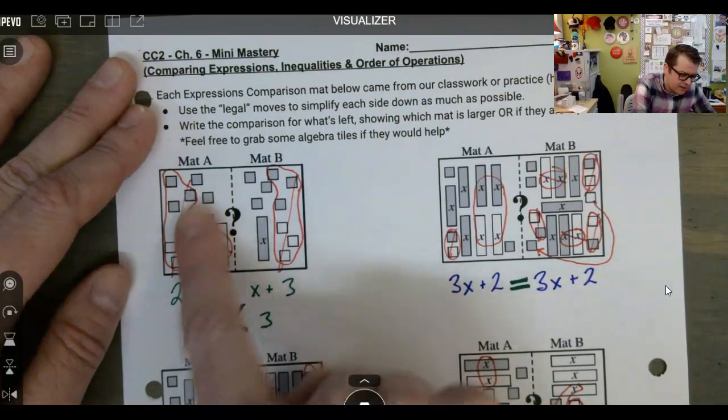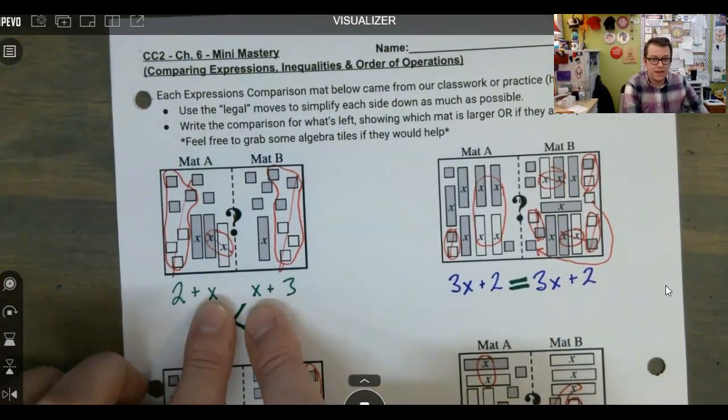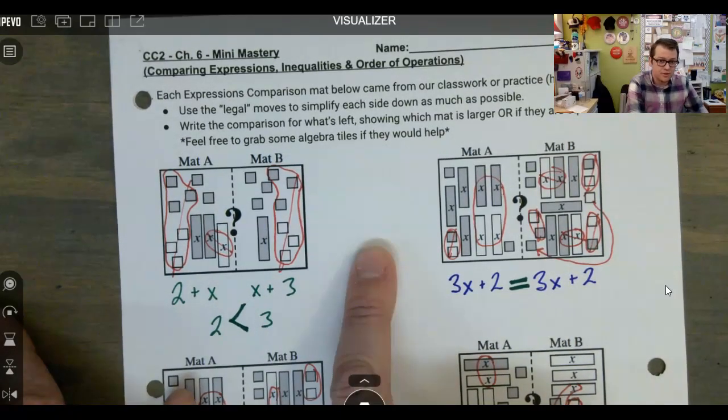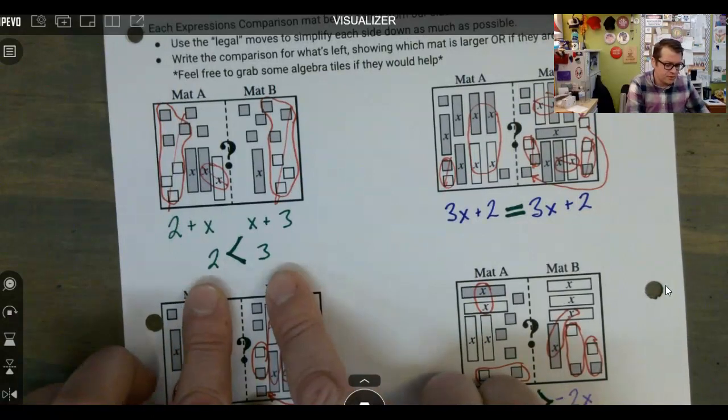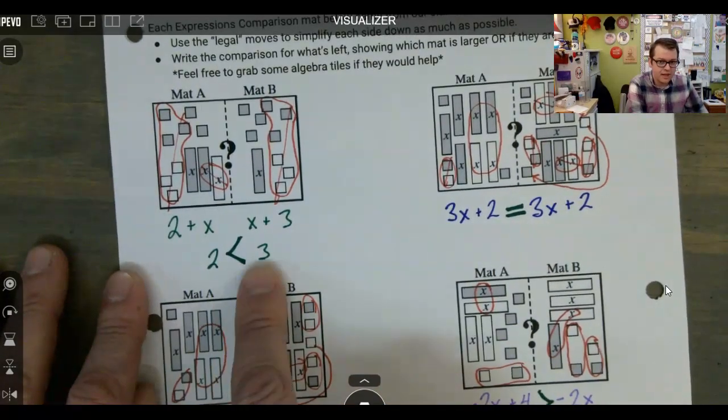Alright, so in mat A, after we cancel out everything that is cancelable, we have an X on both sides. So remember, we can take things off of both sides. We can do the same thing to both. So if we do that, we end up with two is less than three. So mat A would be less than mat B.